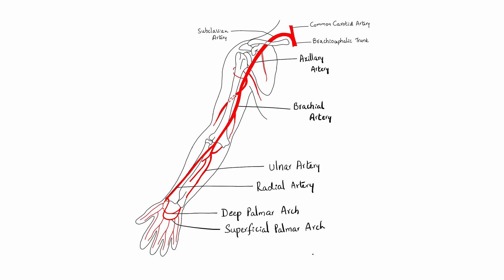The deep veins of the upper limb follow the arteries and run superiorly towards the axilla, where the axillary vein travels superiorly and becomes the subclavian vein at the outer border of the first rib. The subclavian vein continues towards the root of the neck where it joins the internal jugular vein to form the brachiocephalic vein. The two brachiocephalic veins — one from the right and one from the left — join each other to form the superior vena cava, which runs into the heart.